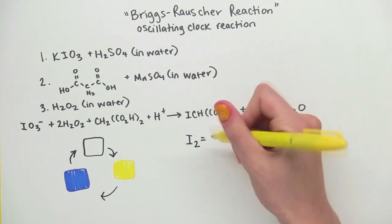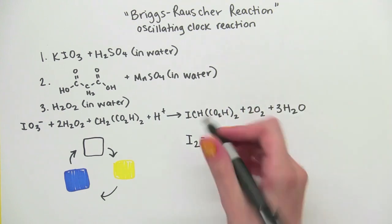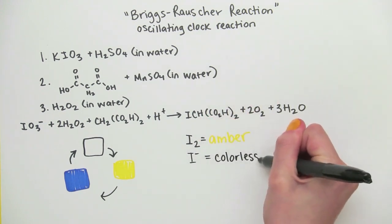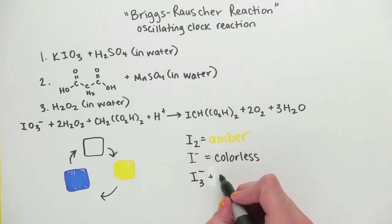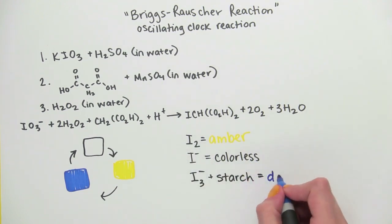I2 is amber, I- is colorless, and I3- is deep blue when it interacts with starch in the solution.